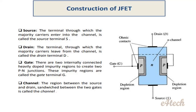And Gate: it is an interconnected area — two internally connected heavily doped impurity regions which form two PN junctions. These impurity regions are called the Gate terminal. The two heavily doped regions form the Gate.